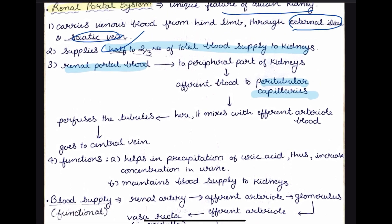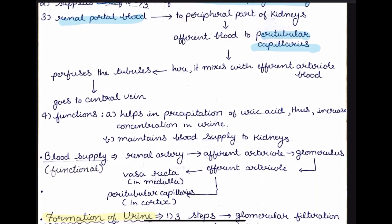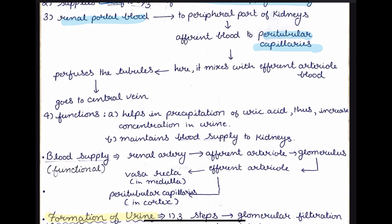The function of the renal portal system is that it helps in the precipitation of uric acid, thus increasing the concentration of urine, and it also maintains the functional blood supply to the kidneys.